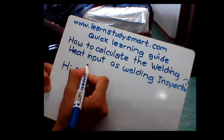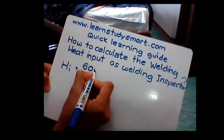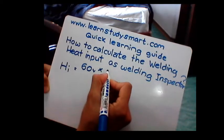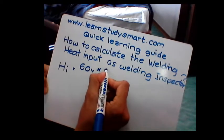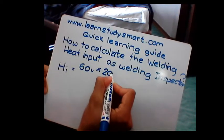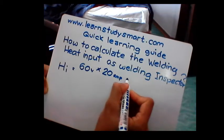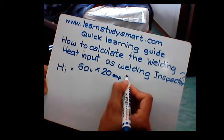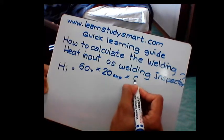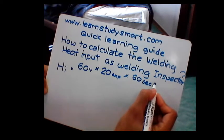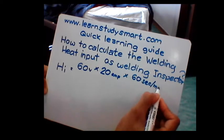Voltage of 60 volts times the amperage of 20 ampere, and you multiply it by 60 seconds per minute.